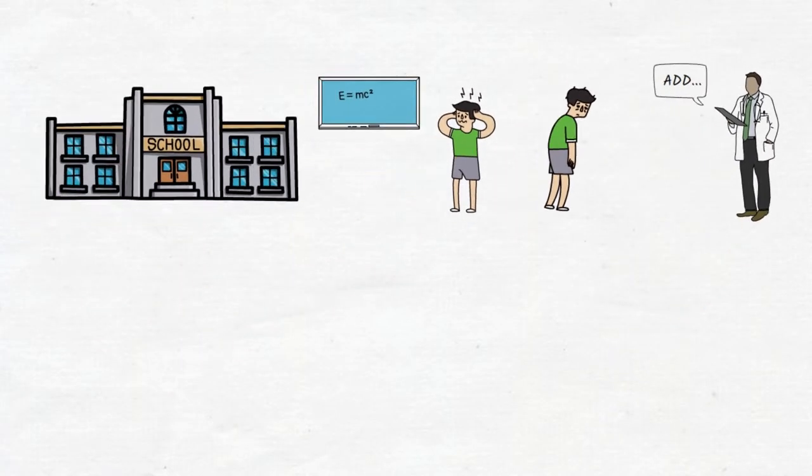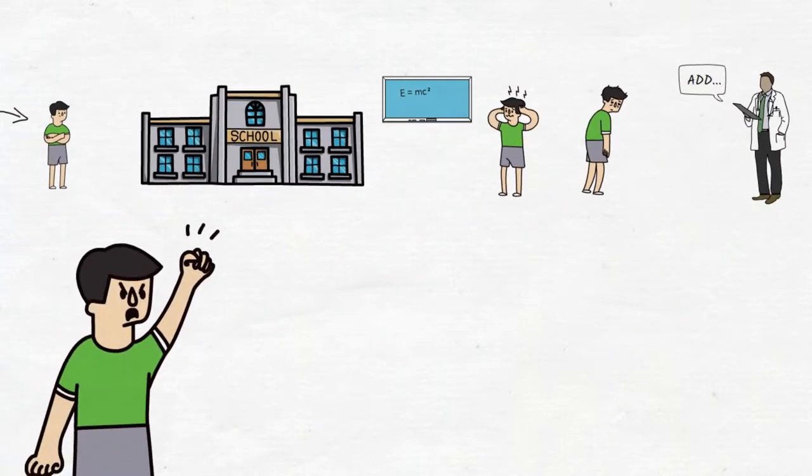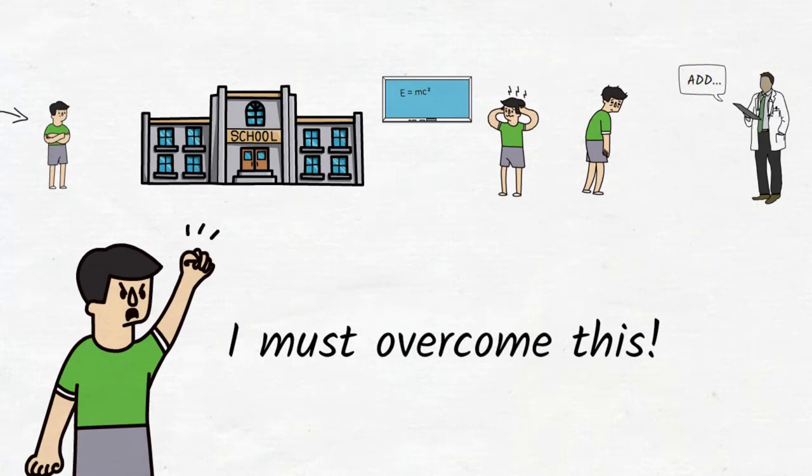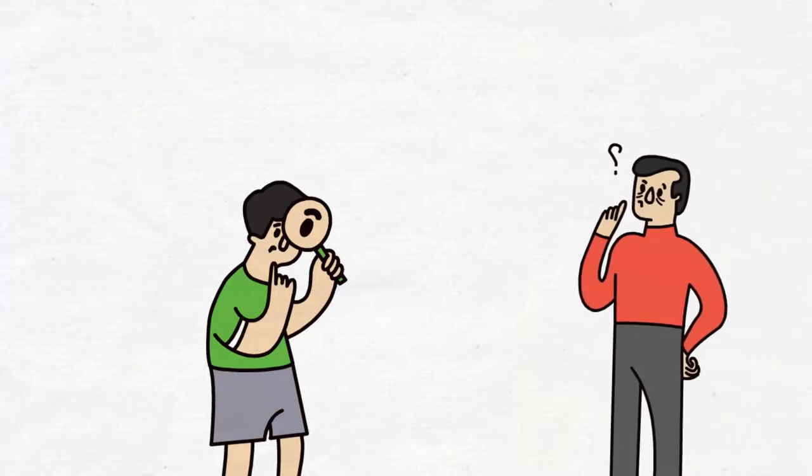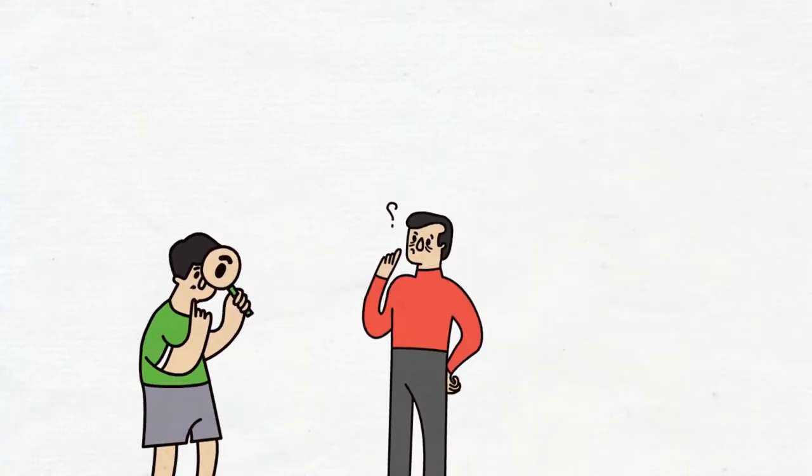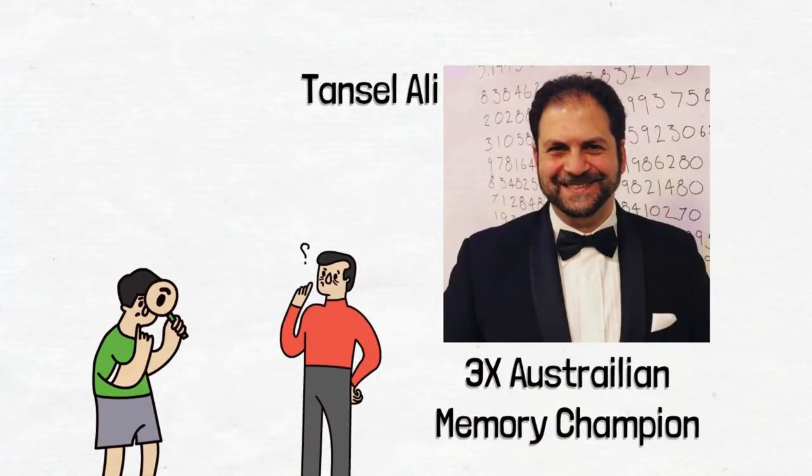But I guess none of it mattered for his redeeming quality, which was that he tried. He tried to overcome his situation. So in search of solutions, and also by some luck, he found a mentor, Tansel Ali, a memory athlete who taught him tricks for memorizing things.